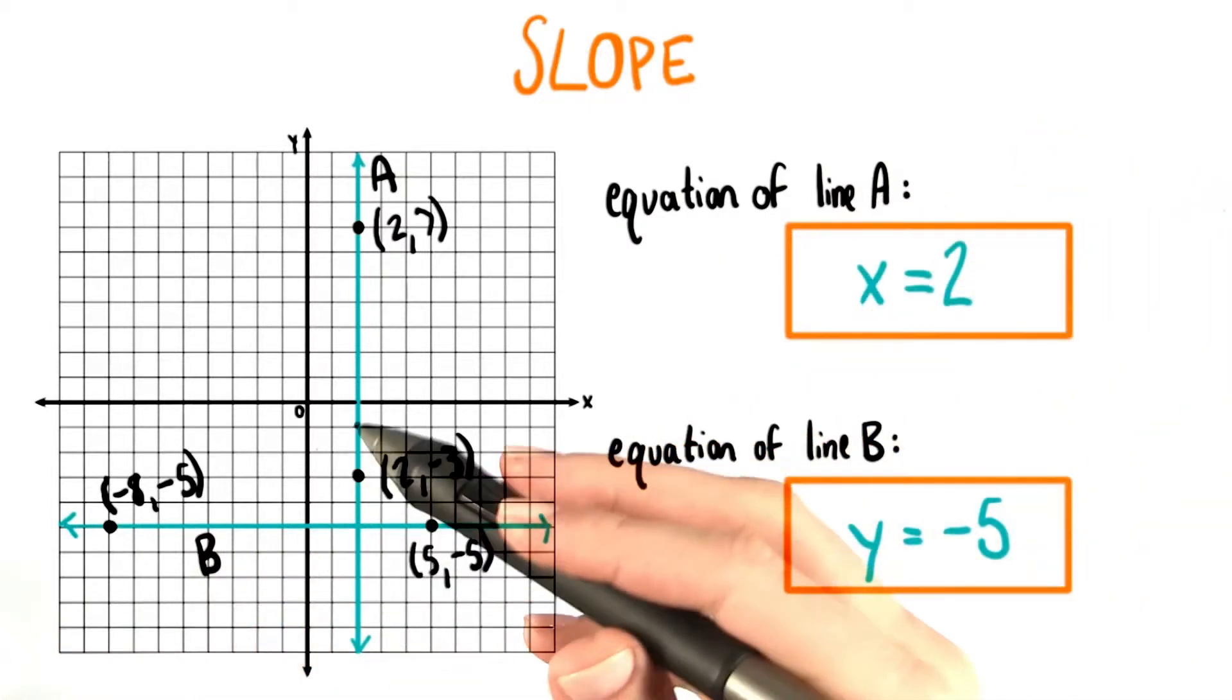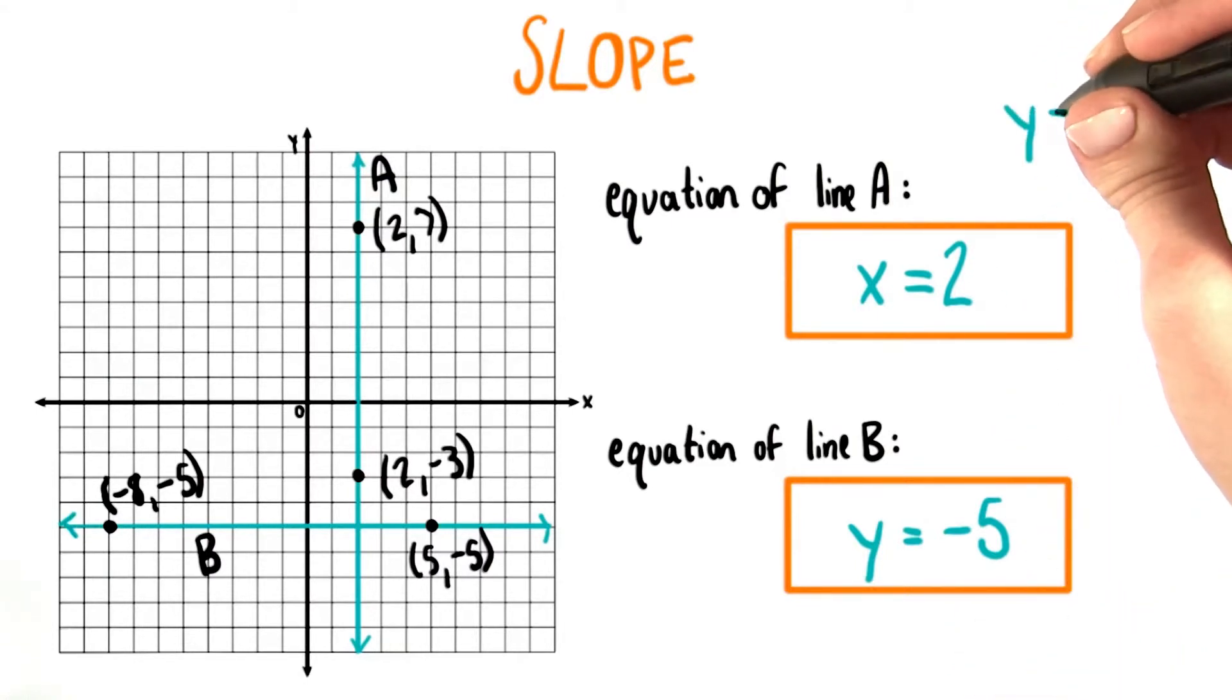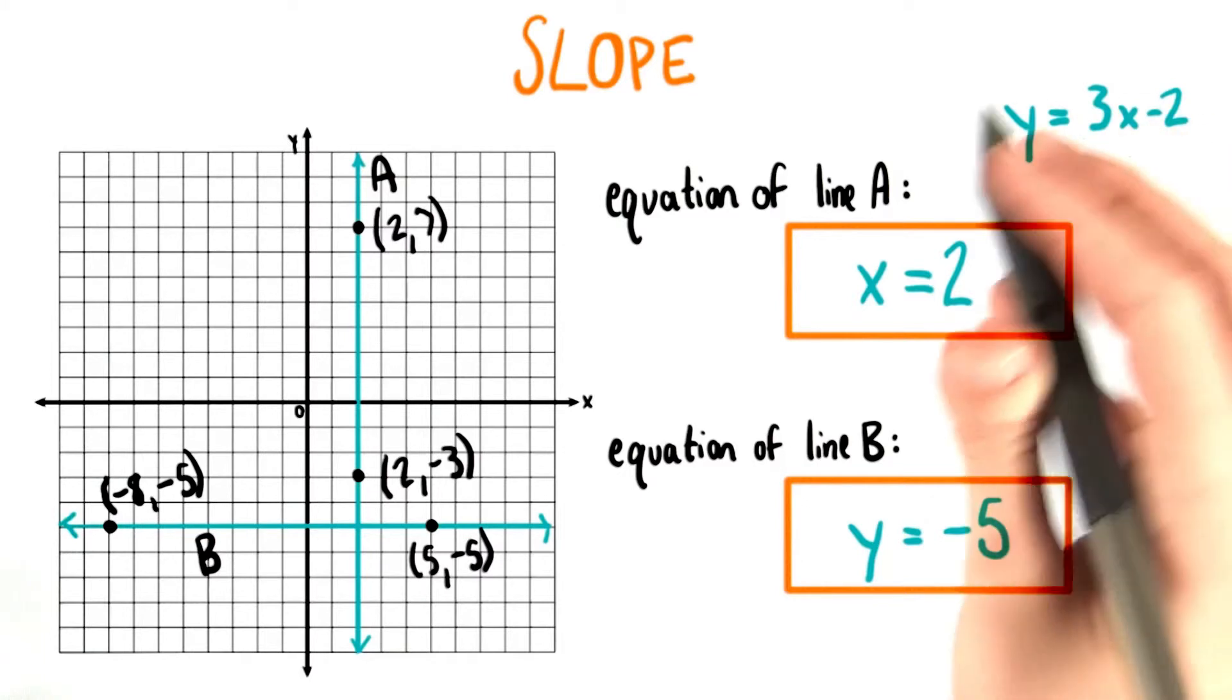Vertical and horizontal lines have special equations because they only have one variable in them. This is pretty different from equations of other lines we've seen, like for example, y equals 3x minus 2.